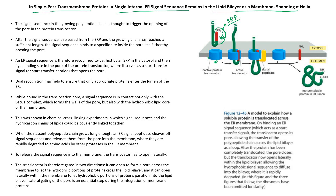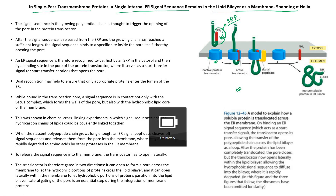Dual recognition ensures that the correct protein is directed into the lumen of the endoplasmic reticulum. SRP's dual recognition purpose is to confirm it is the appropriate protein entering the ER lumen.